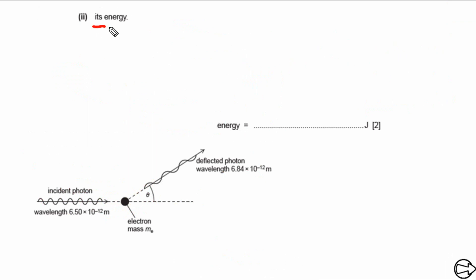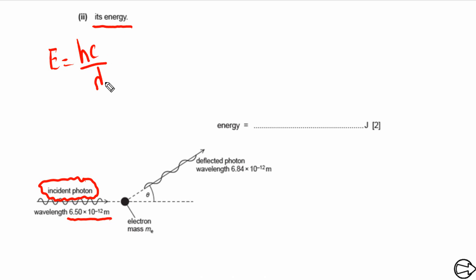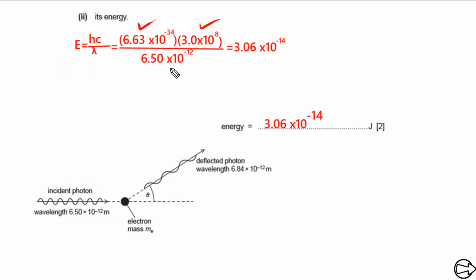For this part, we need to calculate the energy of the incident photon. Its wavelength is given, and energy is simply equal to hc over lambda, where h is Planck's constant and c is the speed of light. We plug in the values of h, c, and lambda for the incident photon to calculate the energy of the incident photon.